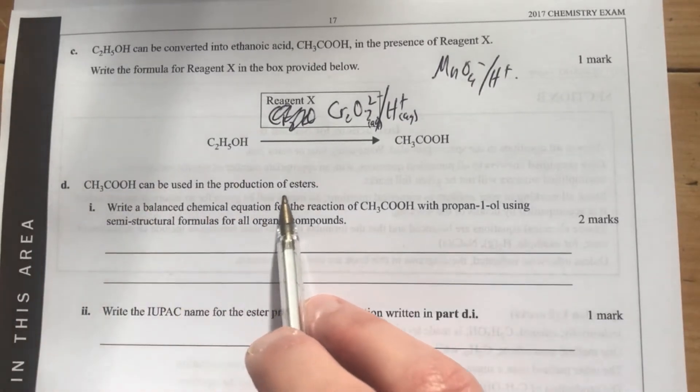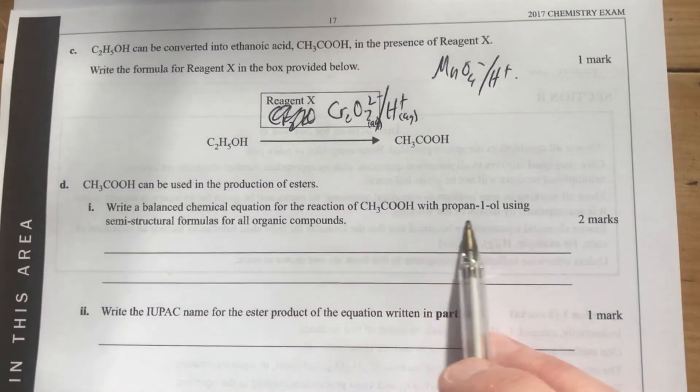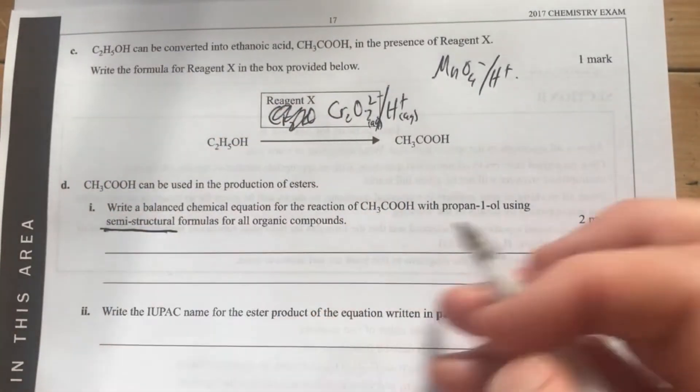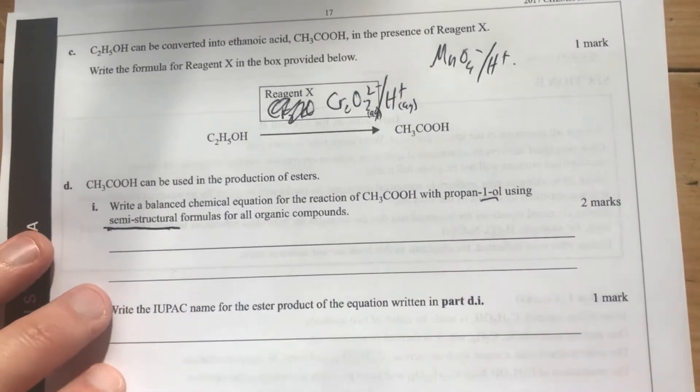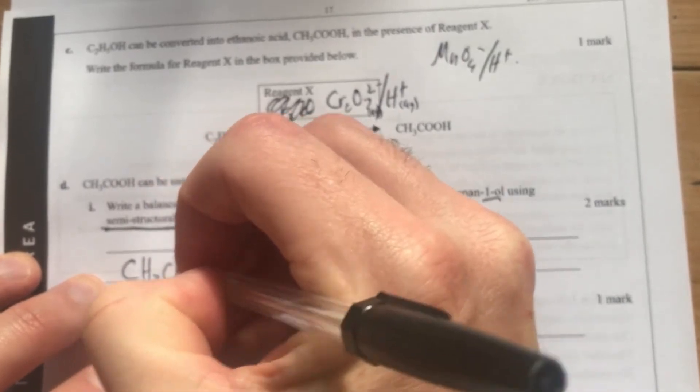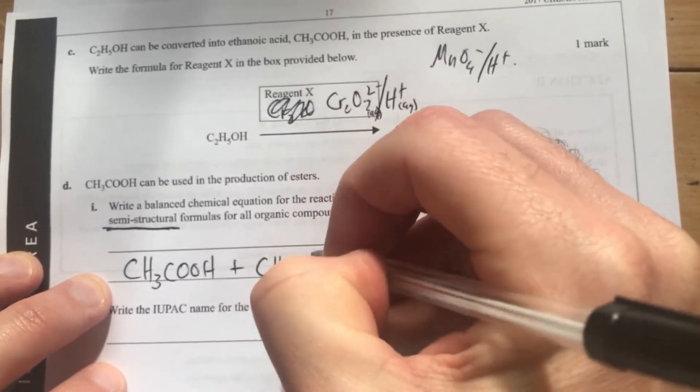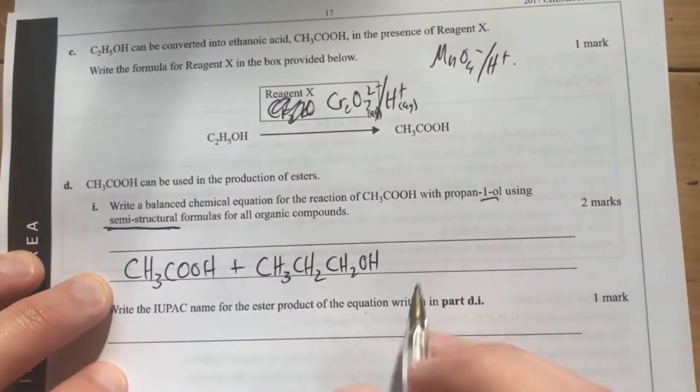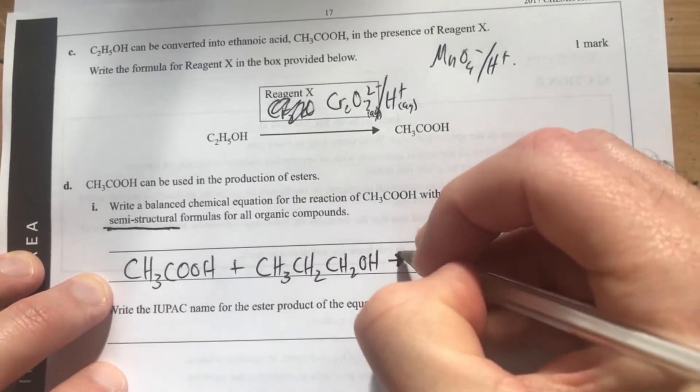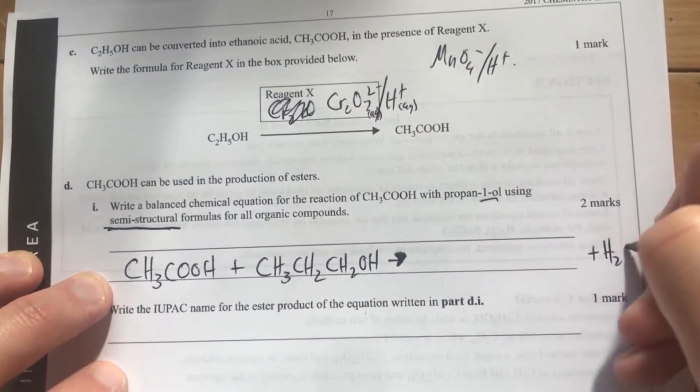Ethanoic acid is used in the production of esters. Write a balanced chemical equation for the reaction between ethanoic acid and propanol using semi-structural formula. We're looking at propanol, so let's start making this. We're going to start off with our reactants, which are pretty straightforward: CH3COOH plus CH3CH2CH2OH being 1-propanol or propan-1-ol. This is going to form our ester. Esterification reactions, remember, are condensation reactions. So we're going to have plus H2O over here regardless.